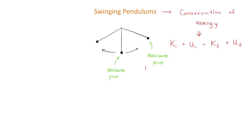In terms of energy, at the maximum point, all of the pendulum's energy is stored as potential energy. That means at the maximum point, the pendulum has no kinetic energy, because the speed of the pendulum is zero.